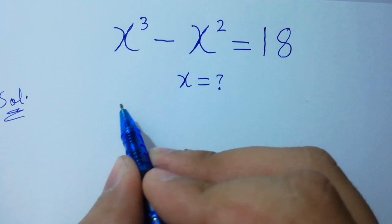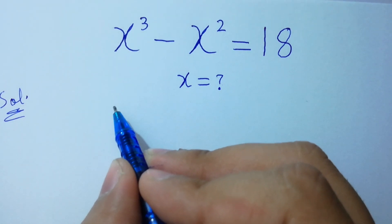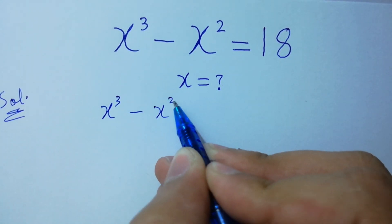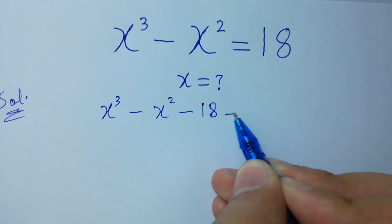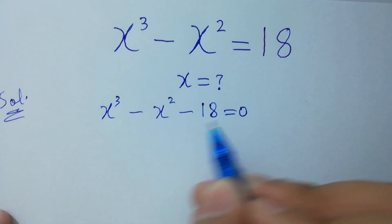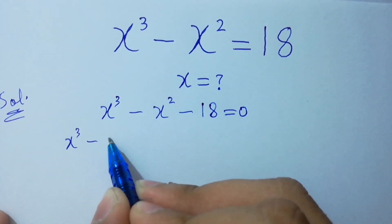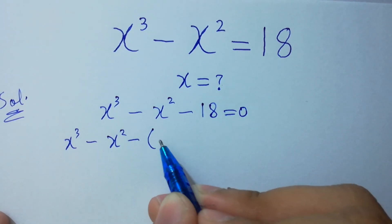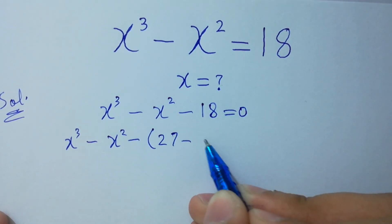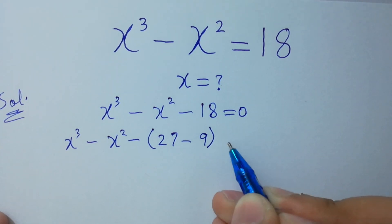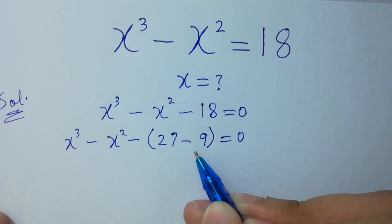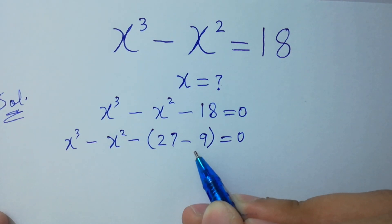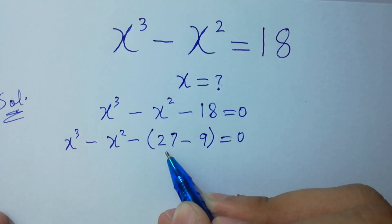Here, this will be equal to x cubed minus x squared minus 18 equals 0. x cubed minus x squared minus 18 is the same as 27 minus 9, because 27 minus 9 equals 18. I used this because of that — there is 3 cubed.